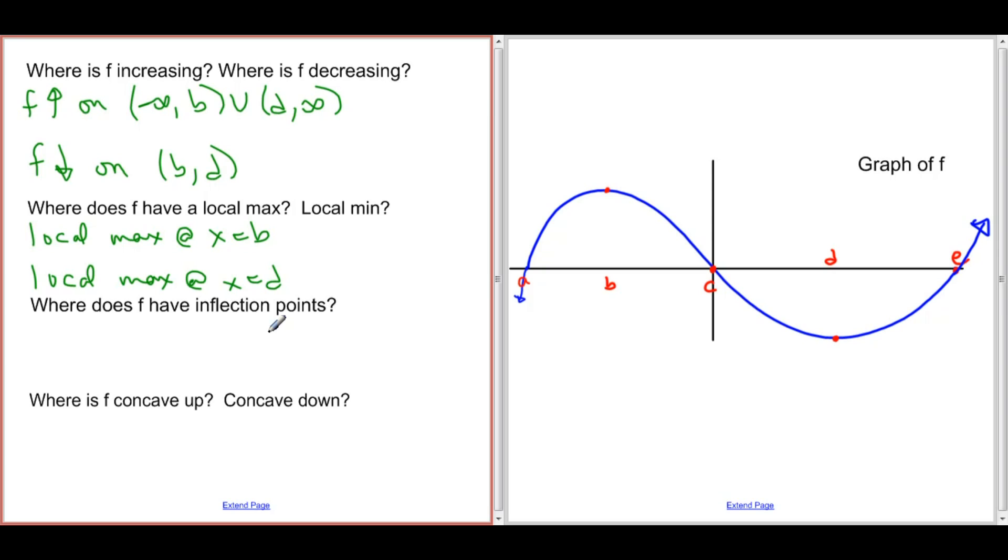We can see here that f is concave down from negative infinity to c. So actually, we'll put that in our concave down area. f is concave down on the interval from negative infinity to c.